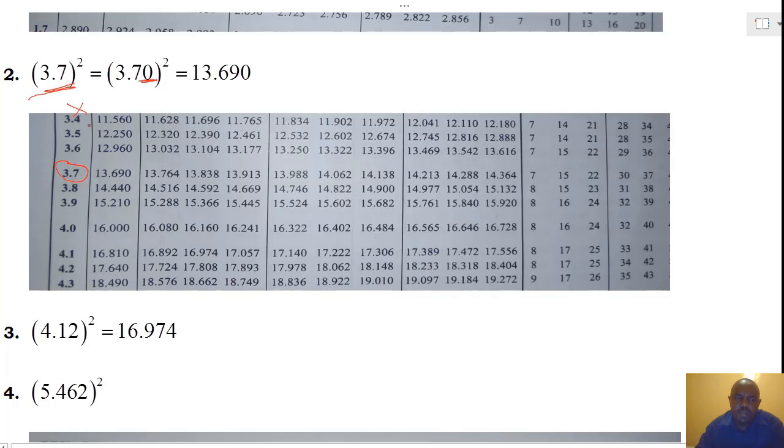And inside the table, we locate our zero. And where 0 and 3.7 are meeting, they are meeting at 13.690. Hence, the square for 3.7 is therefore equals to 13.690.